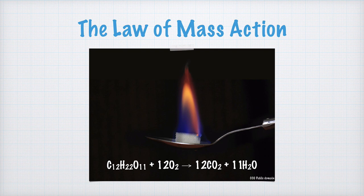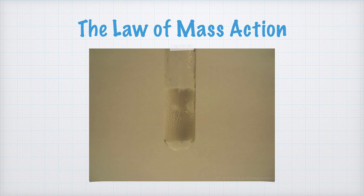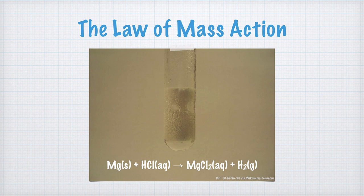Take a look at combustions, for example. If you burn some sugar, all of it is converted into carbon dioxide and water. Or if you put some magnesium into hydrochloric acid, all of the magnesium is dissolved and turned into magnesium ions as hydrogen gas is formed.